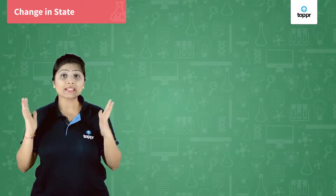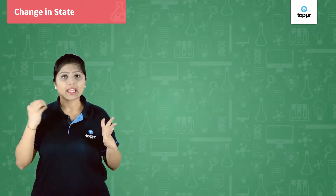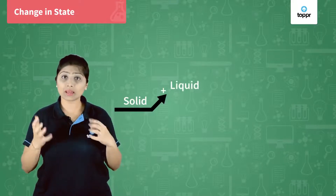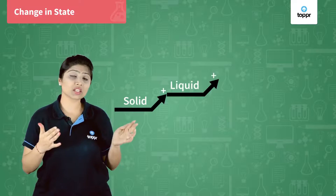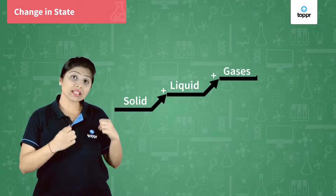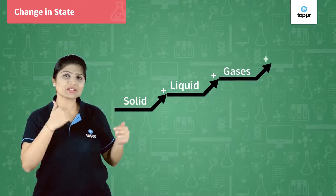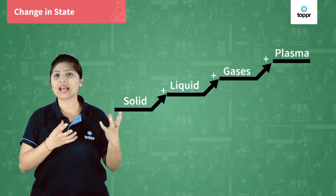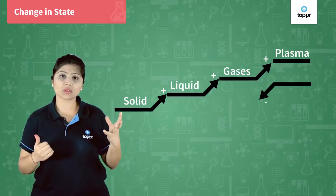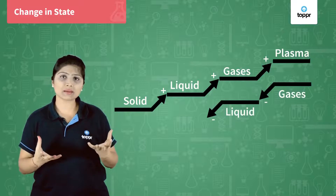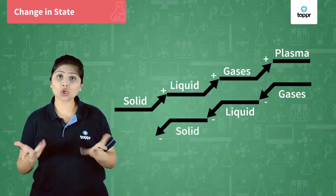The change of state, as we've seen, is because of temperature change. If the temperature of the solid increases, it changes to liquid state. If the temperature of liquid increases, it changes to gaseous state. And if we increase the temperature of the gas, it will change to plasma state. Conversely, if we have a gas and we decrease the temperature, it will come back to the liquid state, and if we decrease the temperature of the liquid, it will come back to solid state.